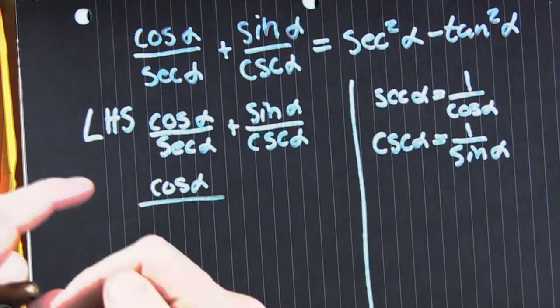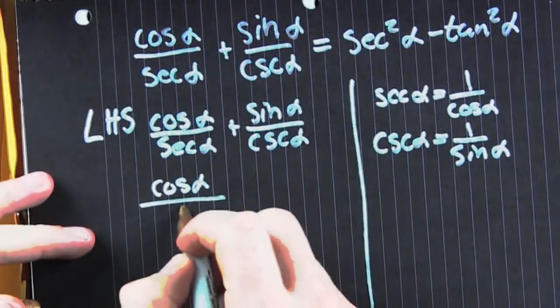And we do both of those, rewriting those denominators, using our reciprocal identities.